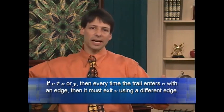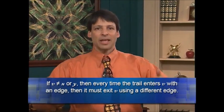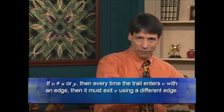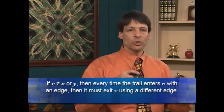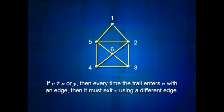Why is that? Let's look at a vertex that's not x or y. Every time the trail enters v with an edge, it must exit v using a different edge. Since every time we enter a vertex we have to leave it with a different edge, there must be an even number of edges attached to v — in other words, the degree of v must be even.